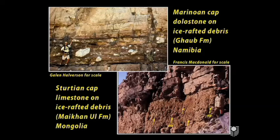It's in the cap carbonates that we have the record of the extreme carbon dioxide concentrations in the atmosphere, which are a prediction of the snowball Earth hypothesis, and only of the snowball Earth hypothesis. Because if you have much less ice than that, if you have large areas of open water, then you don't need nearly as much CO2 to deglaciate.